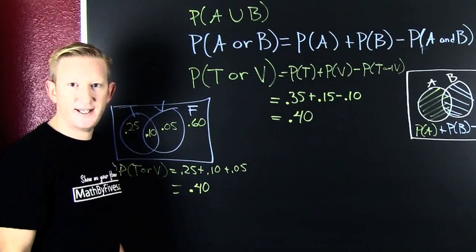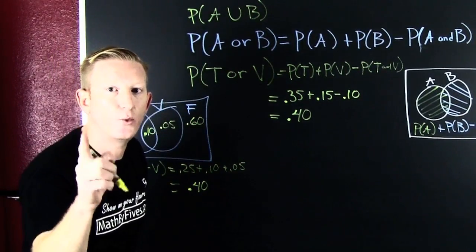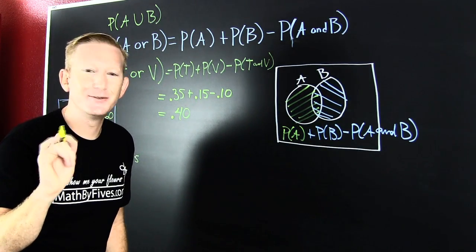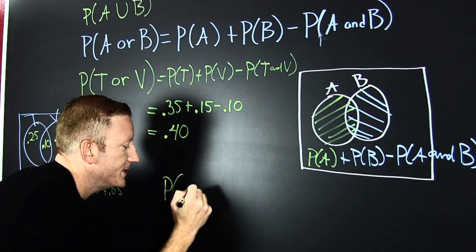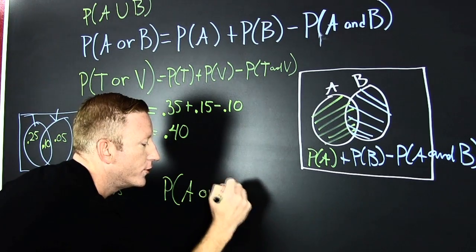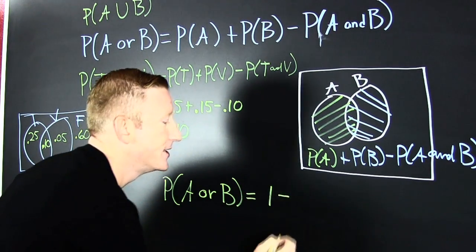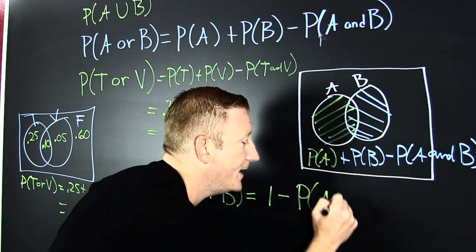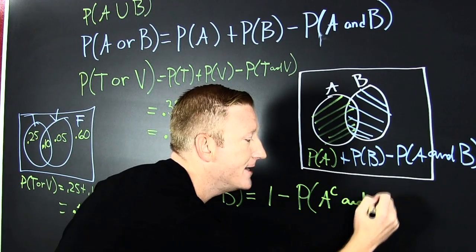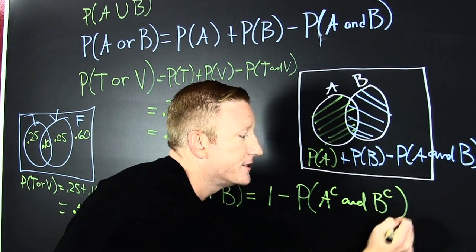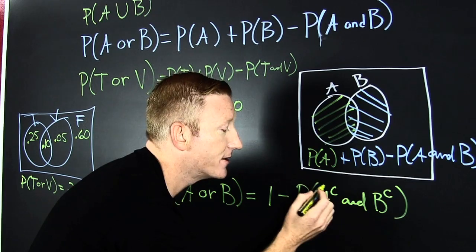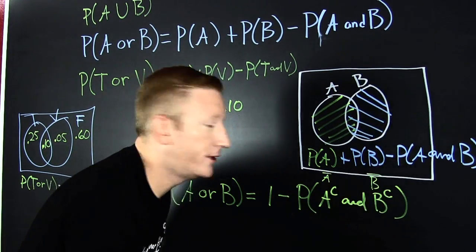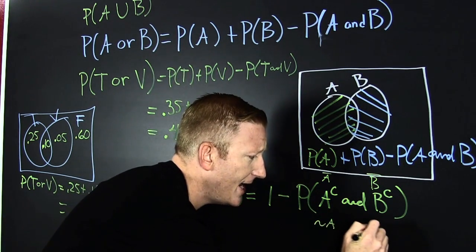40% chance of ticketed or vandalized. There's one more way we could see this — the complement. The probability of A or B is going to be one minus the probability that neither one of them happen: A complement and B complement. This could also be written as A-bar and B-bar, or not A and not B.